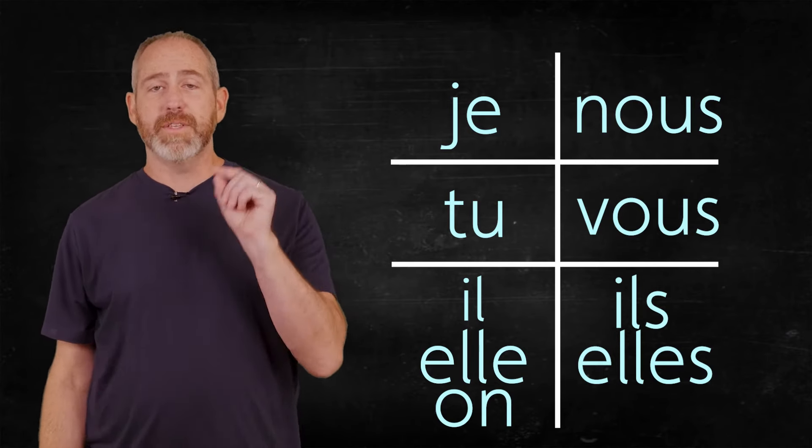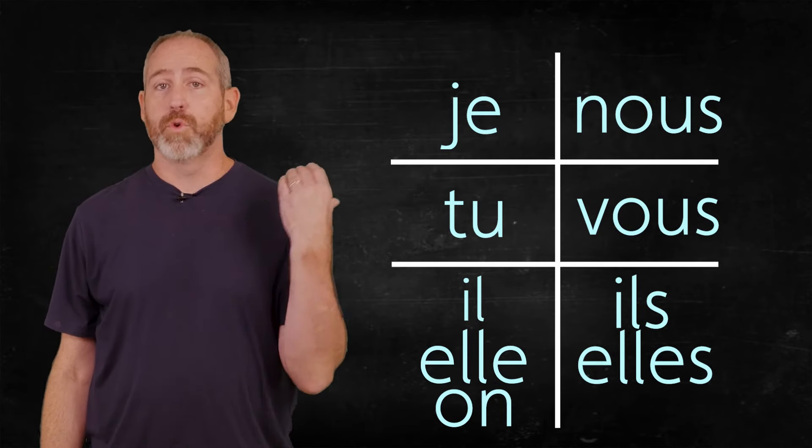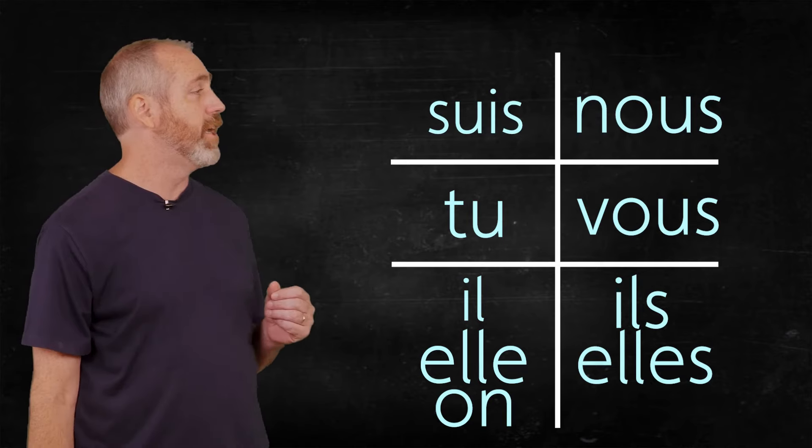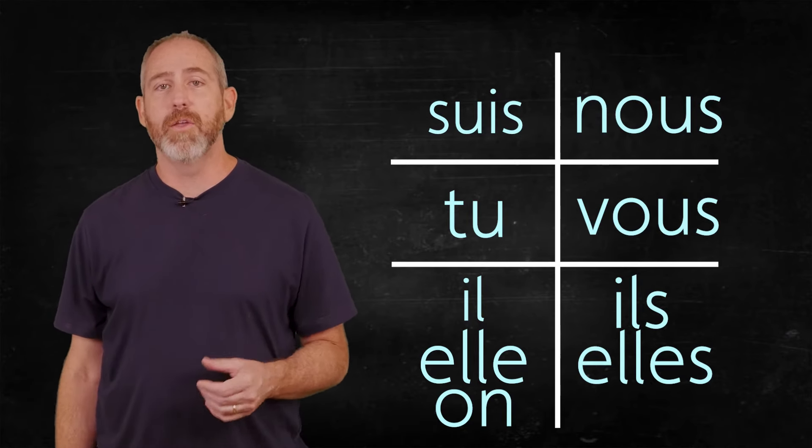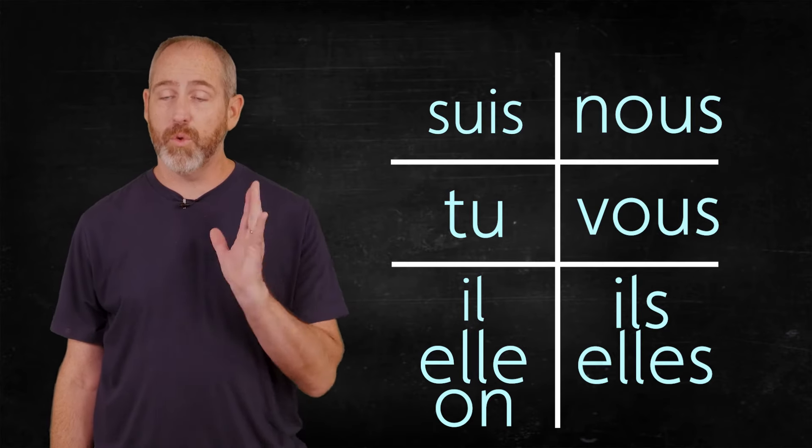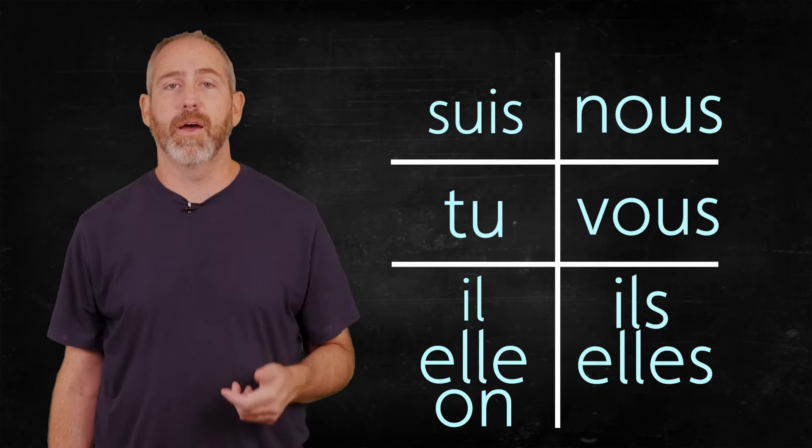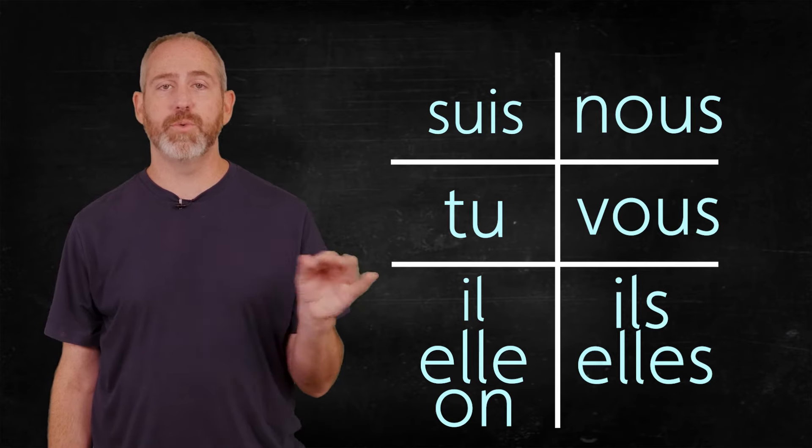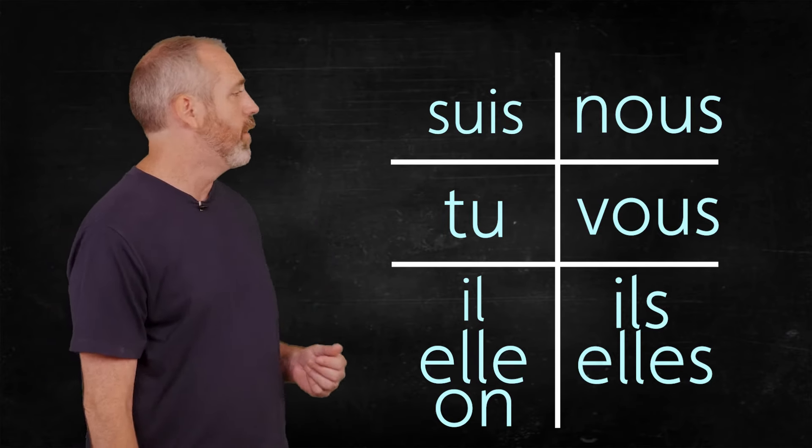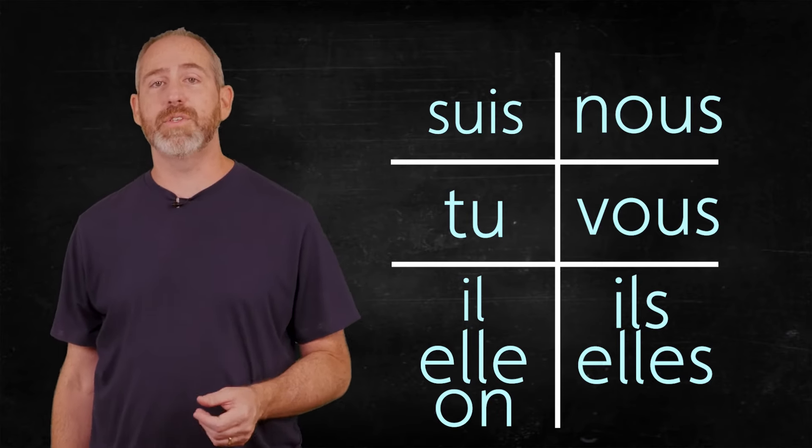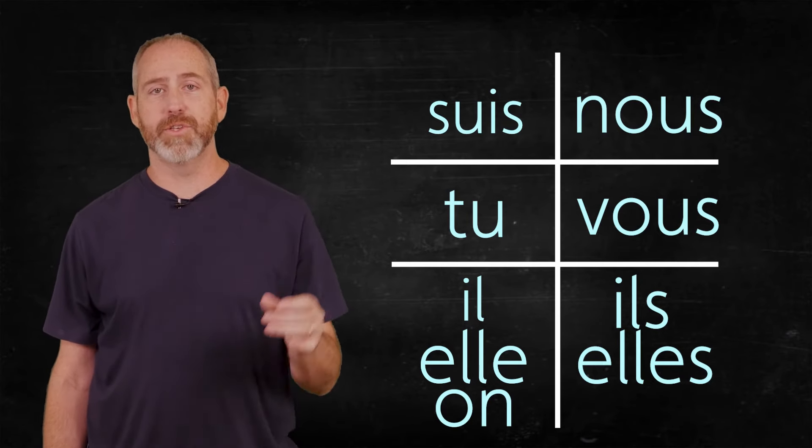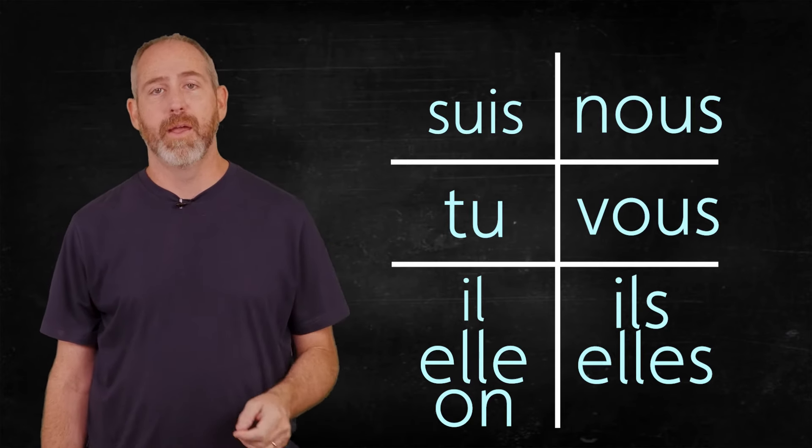On the top left, with je, we would use this word, suis. Remember that U-I sound has that oui sound like we're saying oui. Yes. So je suis, je suis, not saying that S at the end, consonant at the end, we're not going to pronounce it. Je suis. So that's how you say I am. So the I is je, and the suis is the am.